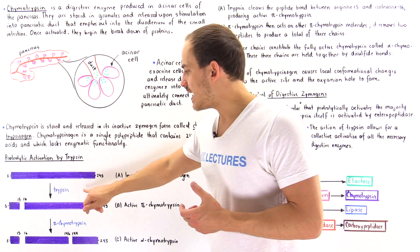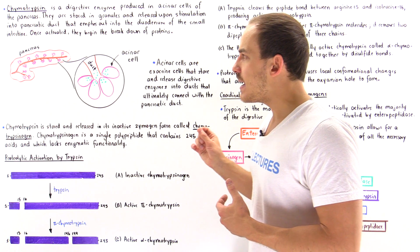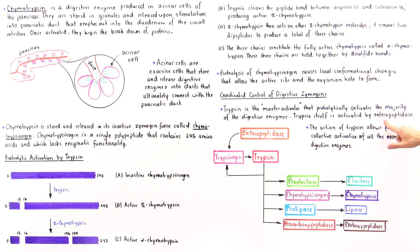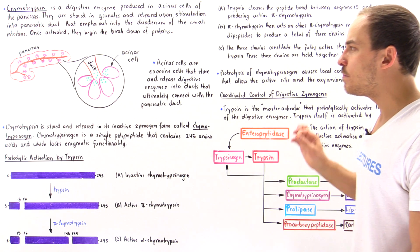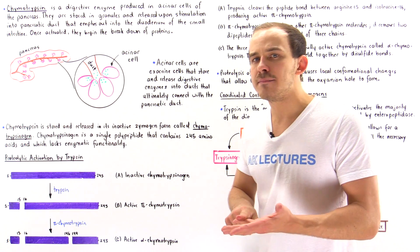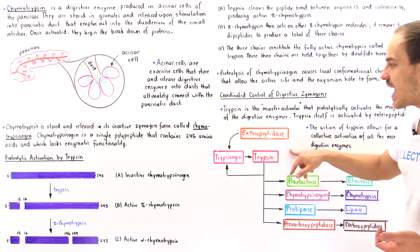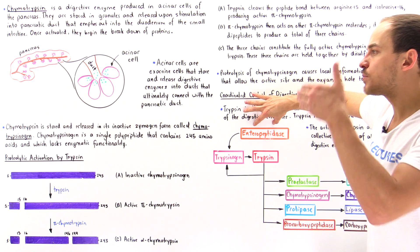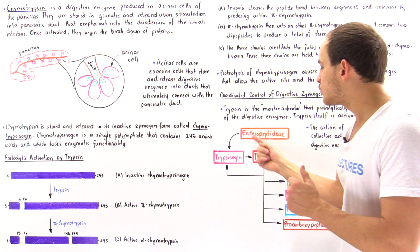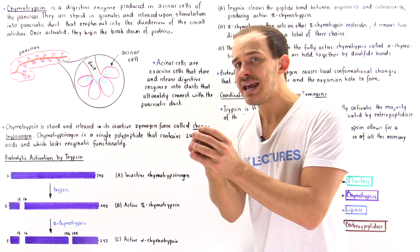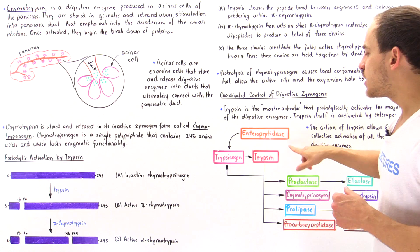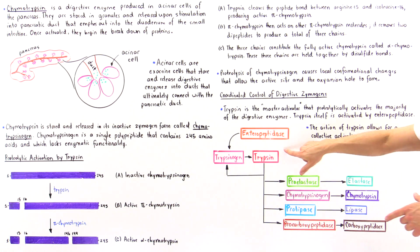What activates trypsin itself? The cells of our body produce a special enzyme known as enteropeptidase. It is enteropeptidase that activates trypsin from its zymogen form, trypsinogen. When enteropeptidase proteolytically cleaves a bond in trypsinogen, the entire structure changes, creating the proper conformation of the active site that allows trypsin to carry out its activity.